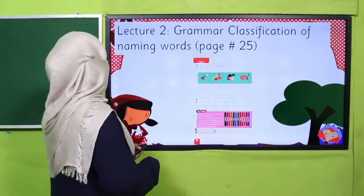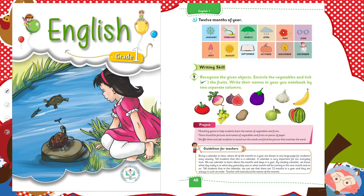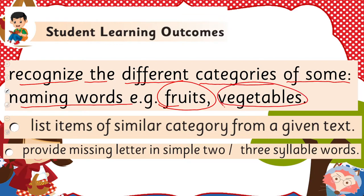My dear children, under the title of grammar we are going to learn classification of naming words — we learn how to classify naming words. Before this, in English for Grade 1, I have already taught you how to classify, and we did an activity for vegetables and fruits. I hope you remember; if not, you may watch that video lecture again. We will learn further to recognize the different categories of naming words, that is fruits and vegetables.